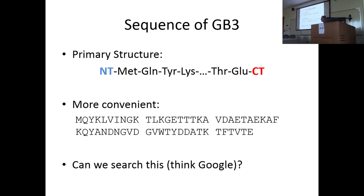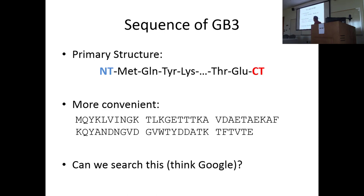We talked about primary structure last time. We can represent it in terms of bonds but also in three-letter codes — this starts with methionine connected to glutamine, pyrazine, lysine, and so on. By convention we start with the N-terminus and end with the C-terminus. It's usually much more convenient to represent primary structure in the one-letter codes. Danusha talked a lot about memorization — if you immerse yourself in this field you will end up memorizing these, and the quicker you can do that, the easier it will be to be successful.